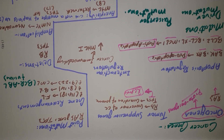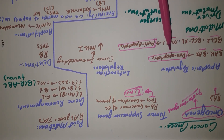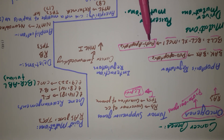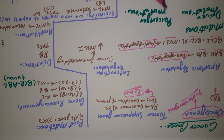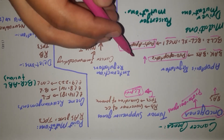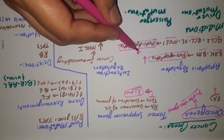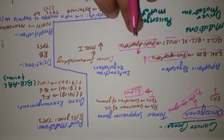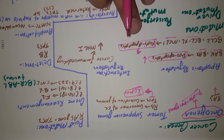When pro-apoptotic members such as BAX and BAK are active, they lead to cellular destruction or cellular death by the process of apoptosis. However, when anti-apoptotic members are active, they lead to sustained cellular growth and survival. In cancer cells, the activity of BAX and BAK is down-regulated, while anti-apoptotic factors are up-regulated, leading to continuous cellular survival as cells become resistant to apoptosis.